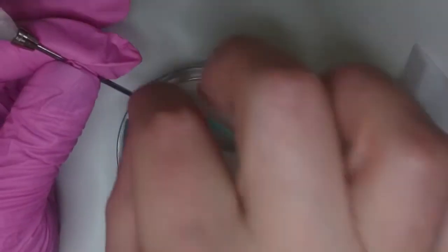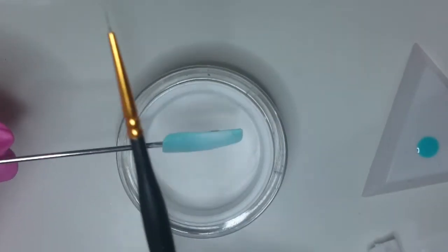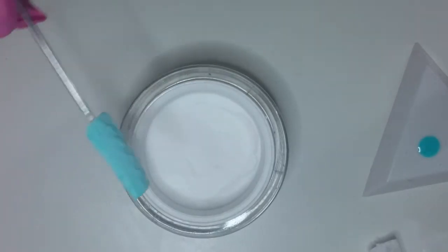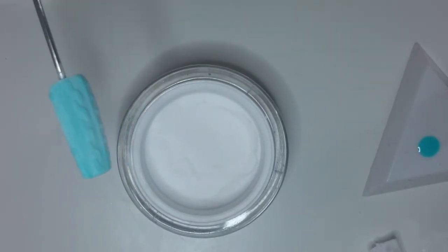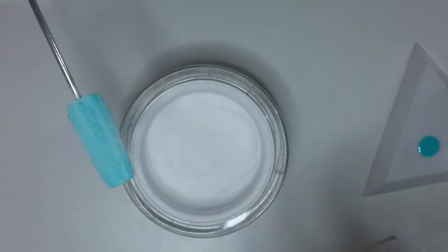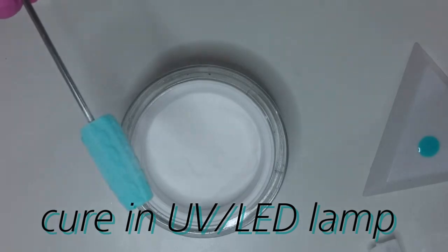Once you're happy, then just give it a tap tap tap, and then I'm going to put that in the light to cure. I'm going to go for two minutes in my LED light. I would normally only do 60 seconds, but because it has powder in it I want to make sure that all of the gel is cured, so I'm going to go for 120 seconds.